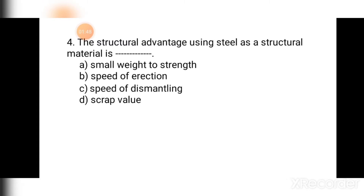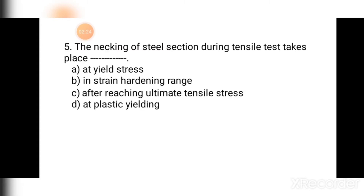Question number four: The structural advantage of using steel as a structural material is — (a) smaller weight-to-strength ratio, (b) speed of erection, (c) speed of dismantling, (d) scrap value. Options b, c, and d are not structural effects; the only structural advantage is the small weight-to-strength ratio. The correct answer is (a) small weight-to-strength ratio.